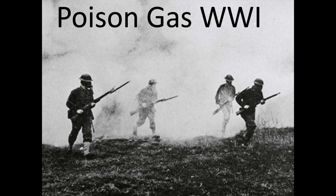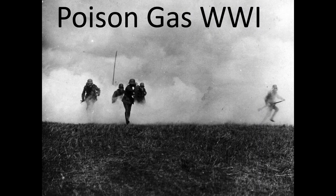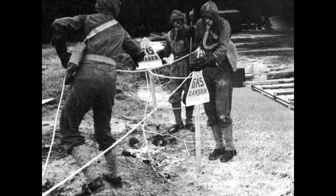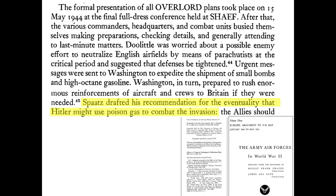The intent of this video is to review the U.S. retaliatory plans if Germany used poison gas on U.S. or British Allied troops during World War II. I don't believe this story has been widely shared to the public. The U.S. was concerned that Germany would use poison gas to stop the D-Day invasion, as discussed in this 1951 U.S. Army Air Forces in World War II, Vol. 3 report.